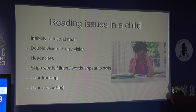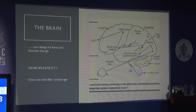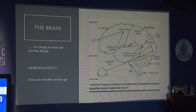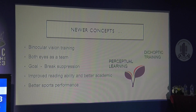The brain can change its form and function through neuroplasticity. There are anecdotal reports of patients losing vision in their good eye at age 40 or 60, after which the amblyopic eye suddenly takes over — demonstrating that plasticity extends beyond the critical period, making it possible to revive vision even in adult amblyopia.